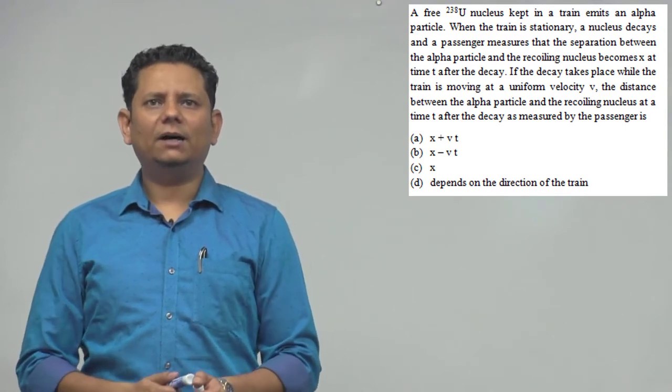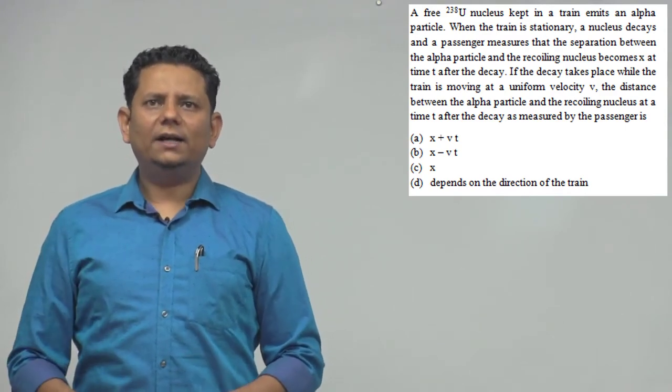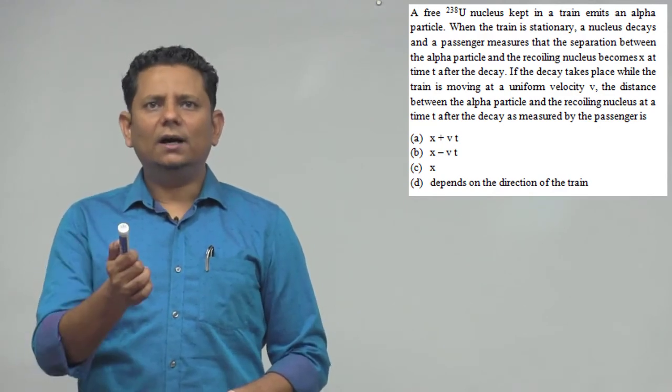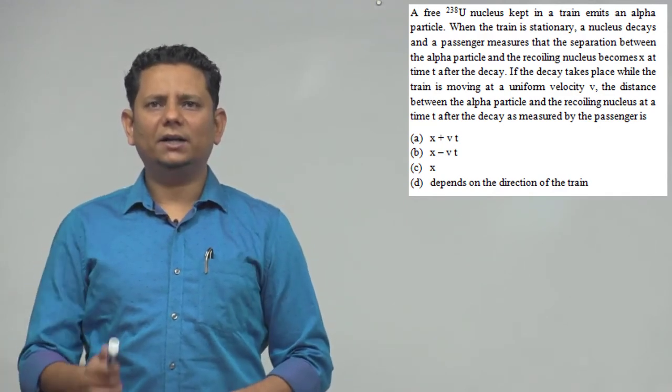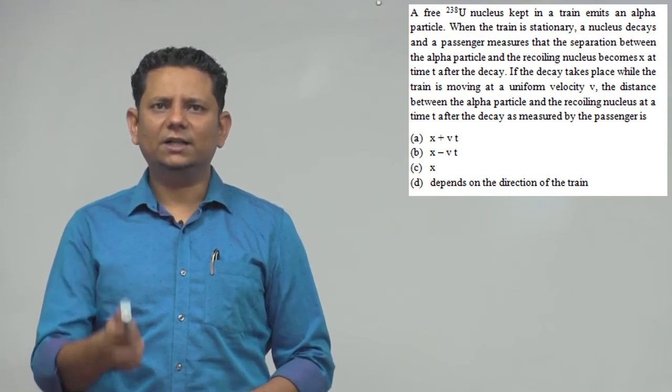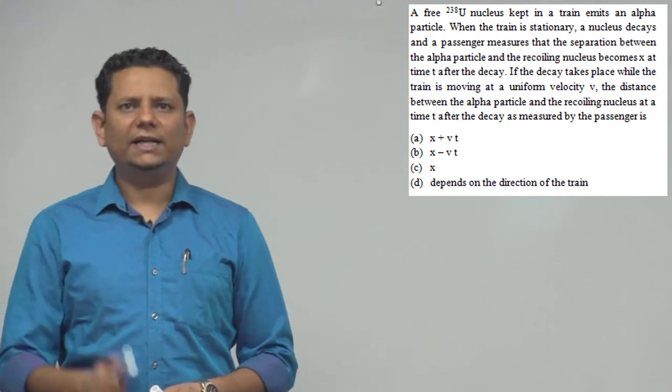If the decay takes place while the train is moving at a uniform velocity V, the distance between the alpha particle and recoiling nucleus at time T after the decay as measured by the passenger is: option (a) X plus VT, (b) X minus VT, (c) X, or (d) depends on the direction of the train.